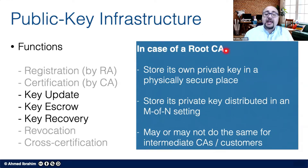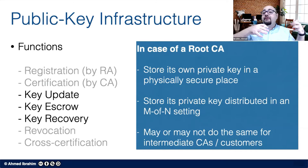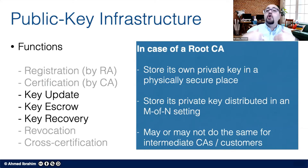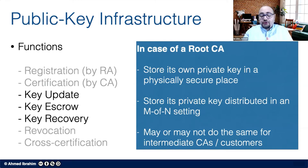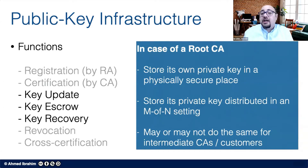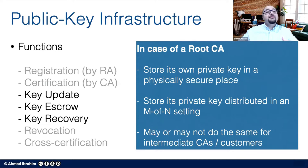These root CAs are usually used to certify a number of intermediate CAs, and then the root CAs go offline for security purposes. The intermediate CAs then carry on the business of certifying other CAs, individuals, or businesses. The root CA may or may not also store private keys for its intermediate CAs or customers — they may do it or they may not. If they do, they may choose a physical secure location or an M-of-N setting as well.